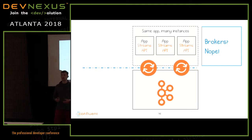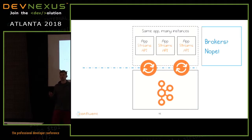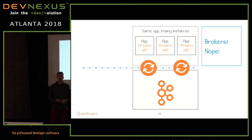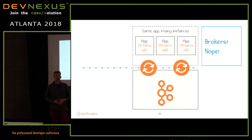Kafka Streams has built-in scalability because it's built on top of the consumer groups concept. Consumer groups are a key concept in Kafka: you group multiple consumers and scale computation from a topic. For example, with 10 partitions you can have one consumer reading all 10 partitions. Start another instance and the load splits — consumer one gets five partitions, consumer two gets the other five, and so on.